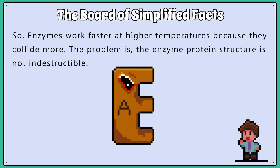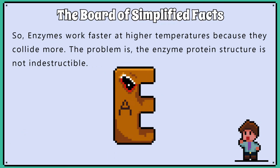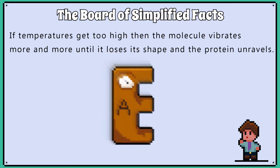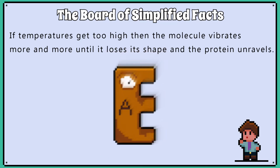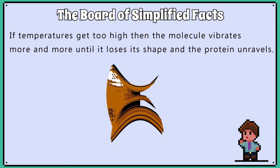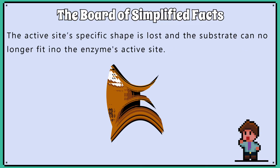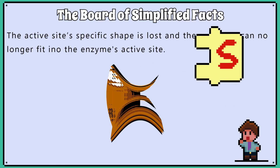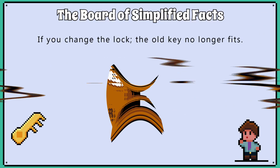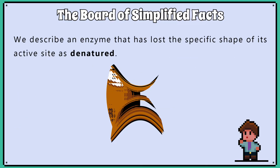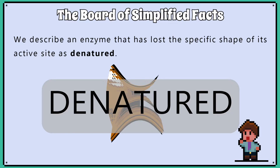The problem is the enzyme protein structure is not indestructible. If temperatures get too high, the molecules vibrate more and more until the enzyme loses its shape and the protein unravels. The active site's specific shape is lost, and the substrate can no longer fit into the enzyme's active site. If you change the lock, the old key no longer fits. We describe an enzyme that has lost the specific shape of its active site as denatured.